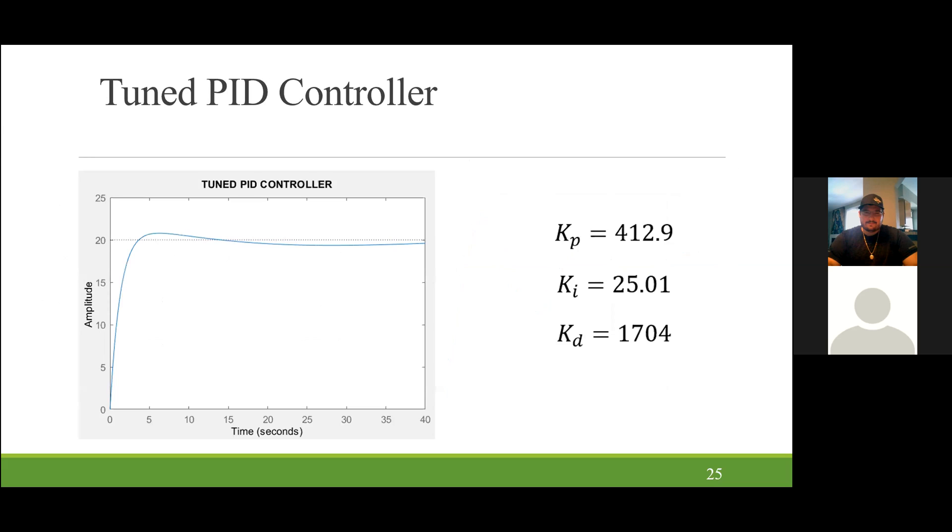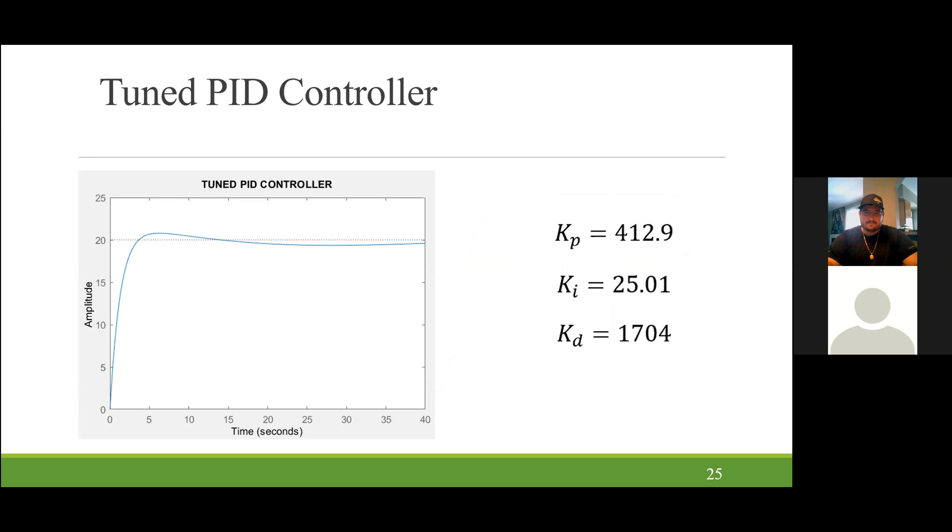So from here we went to advanced tuning using MATLAB, the PID tuner, and basically played around with it for a little bit. We wanted to make it react faster while also making it act more aggressively so that it could compensate and could level out ideally. So the values we determined to finalize were a proportional gain of 412.9, an integral gain of 25.01, and a derivative gain of 1704.